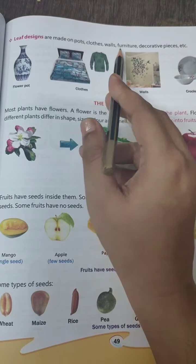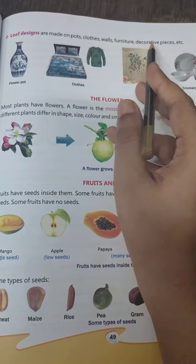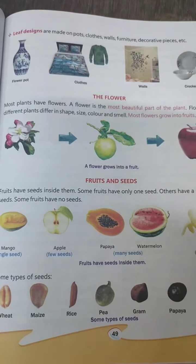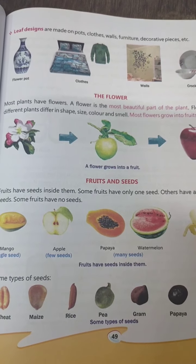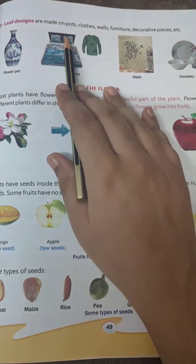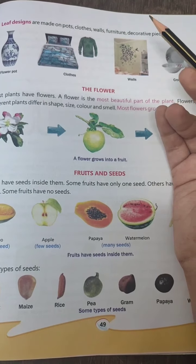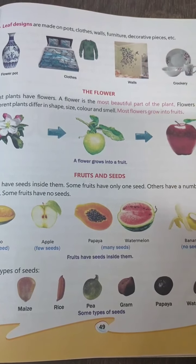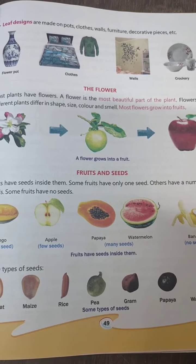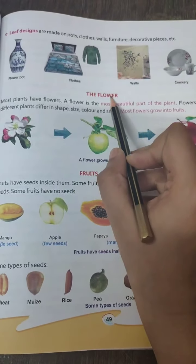Leaf designs are also made on pots, clothes, walls, furniture, and decorative pieces. Leaf designs can be seen on walls, pots, furniture, and other decorative items.